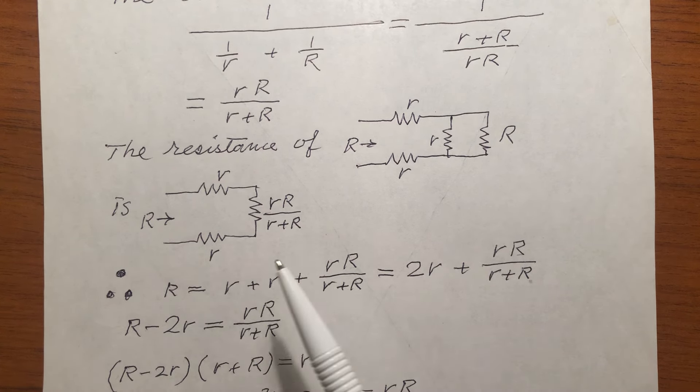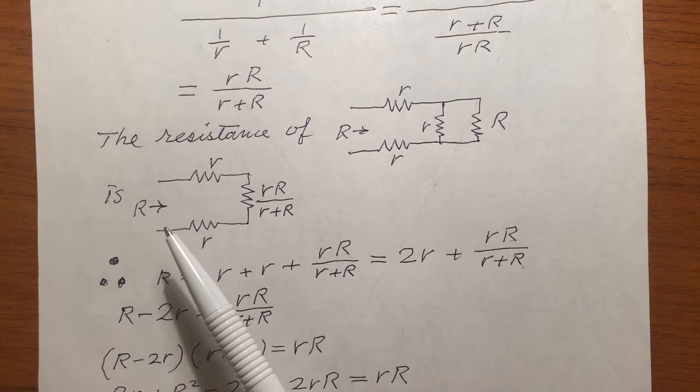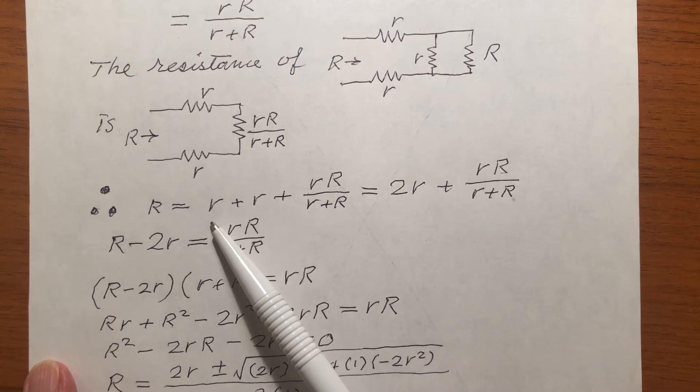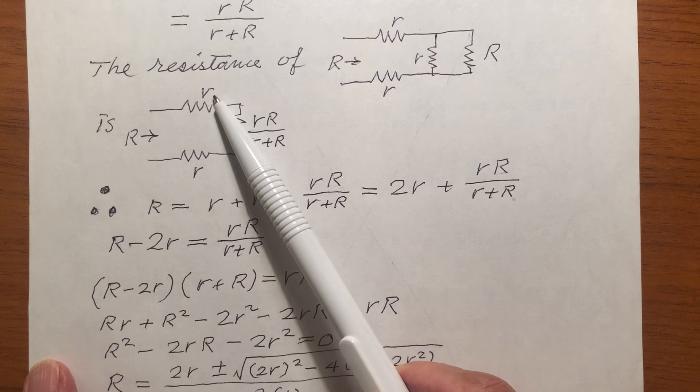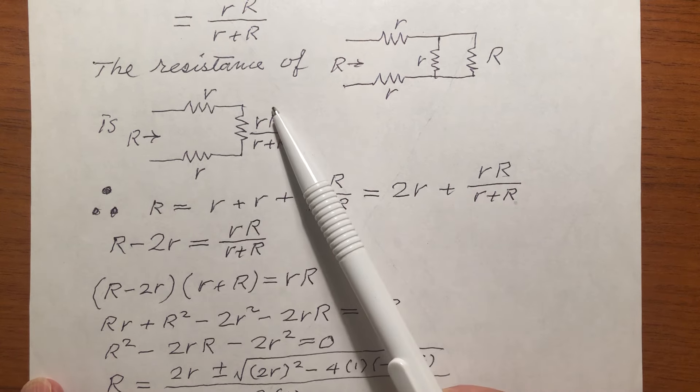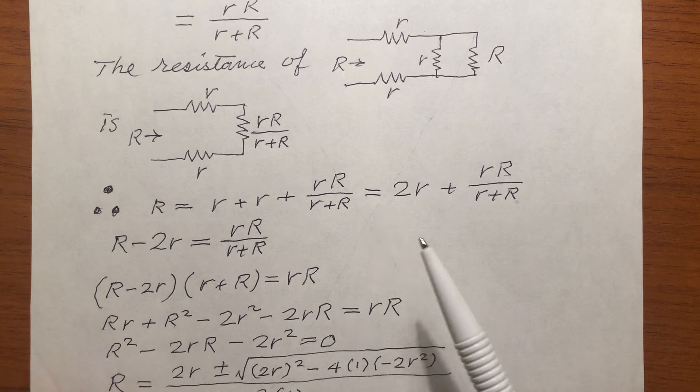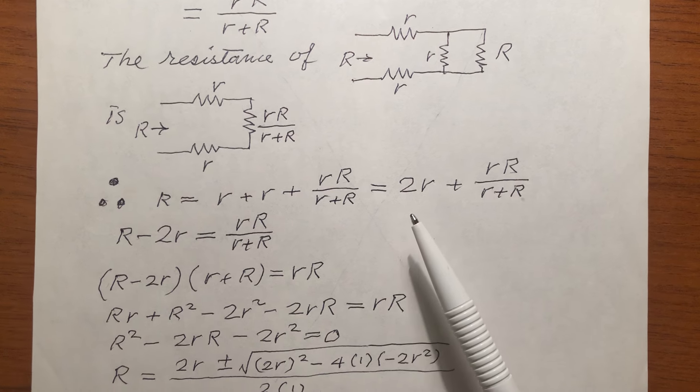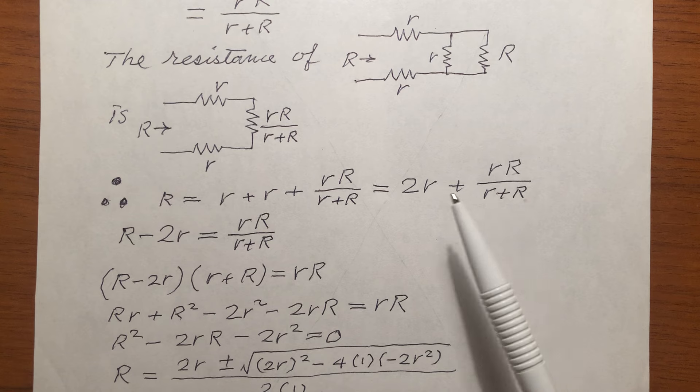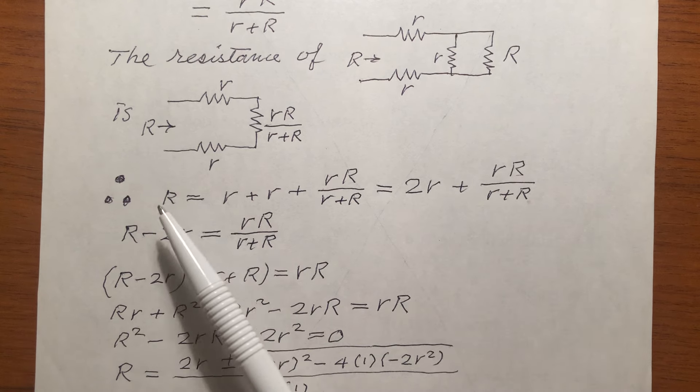Therefore, I can have the relation, capital R is r plus r here, r plus r, and plus this. So, r plus r is 2r, 2r plus this. And you move the 2r to the other side, capital R minus 2r equals this.